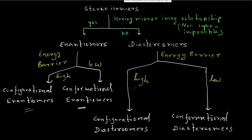So enantiomers are of two categories: configurational and conformational. In the same way, diastereomers are also of two types: configurational and conformational. Configurational are those which have a high energy barrier of interconversion, and conformational diastereomers are those which have a low energy barrier of interconversion.